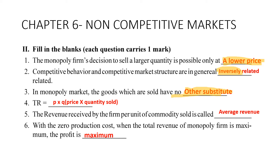Fourth: total revenue is equal to price multiplied by quantity sold (P × Q). For students aiming to score more than 90 or 95, it is always suggested to write the full answer rather than just the short form.